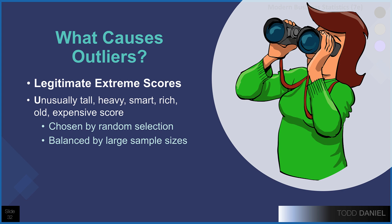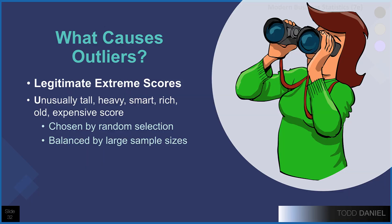What causes these extreme scores? It's important to remember that sometimes, just through natural random selection, we will get extreme scores in our data set. We could have randomly selected someone who is unusually tall, and that might create an outlier with our height data. Or we could randomly select someone who is unusually heavy, or smart, or rich. Someone who is older than everyone else in the data set, or a product that is particularly expensive, or a spike in gas prices — all of these could create outliers, but they are legitimate scores. We can get these outliers through random selection.